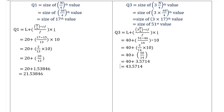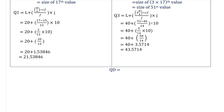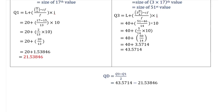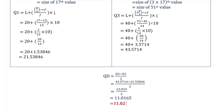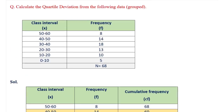Now we have calculated Q1 and Q3 for grouped data. QD = (Q3 − Q1) / 2 = (43.5714 − 21.5384) / 2 = 22.033 / 2 = 11.0165. Hence quartile deviation is equal to 11.02. That is all about quartile deviation. Make sure to like, share, and subscribe. Thanks for watching.